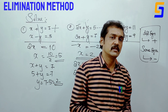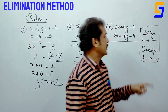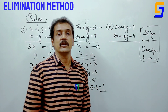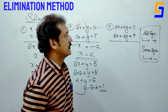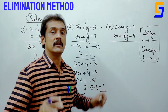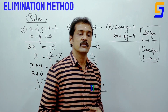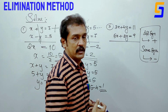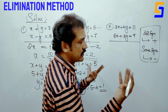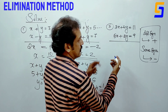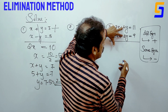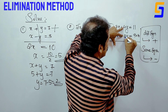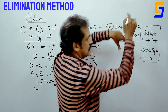3x plus 4y equals 11 and 5x plus 2y equals 1. To eliminate y, we need the coefficients of y to match. The coefficient of y is 4 and 2, so we multiply to make them equal — 4 and 2, that's what we are doing.